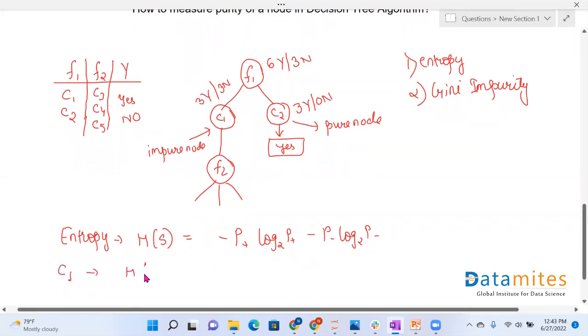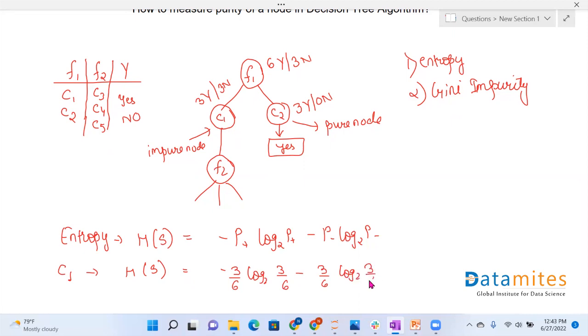For node C1, H of S is given by minus 3 by 3 log base 2 of 3 by 3 minus 0 by 3 log base 2 of 0 by 3. This is equals to 0.